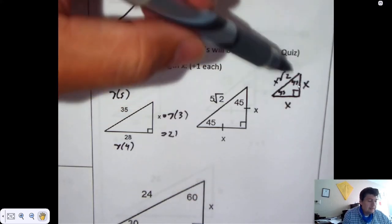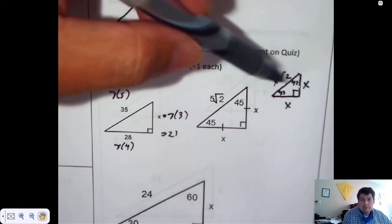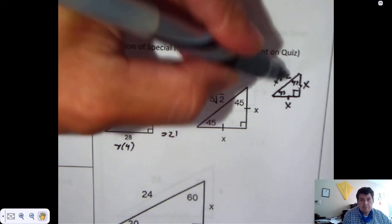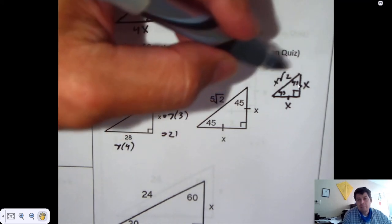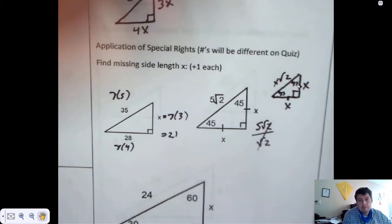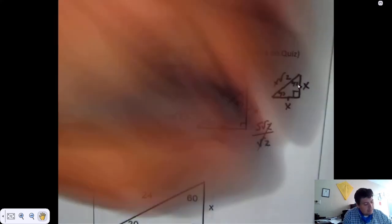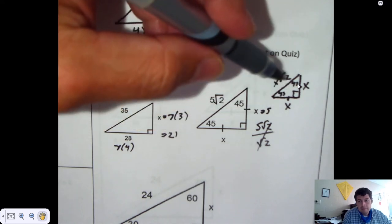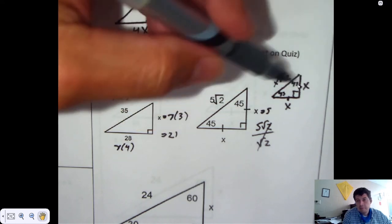Now you know the only difference between the hypotenuse and these congruent sides is that the root of 2 disappeared. Technically you divide by root of 2. Technically you say, okay, x must be 5 root 2 over root 2. Well they cancel. So x is 5. Just look at it, kids. The root of 2 disappears, and it disappears through division.